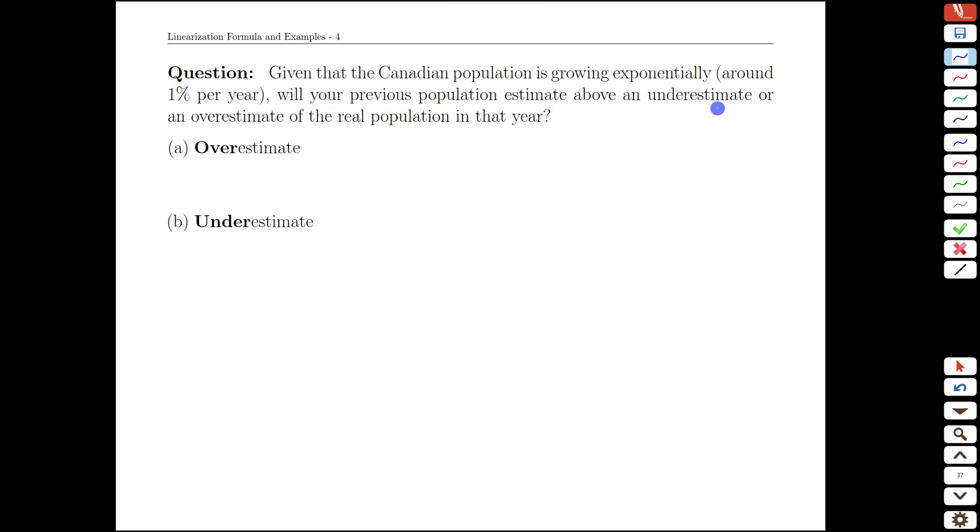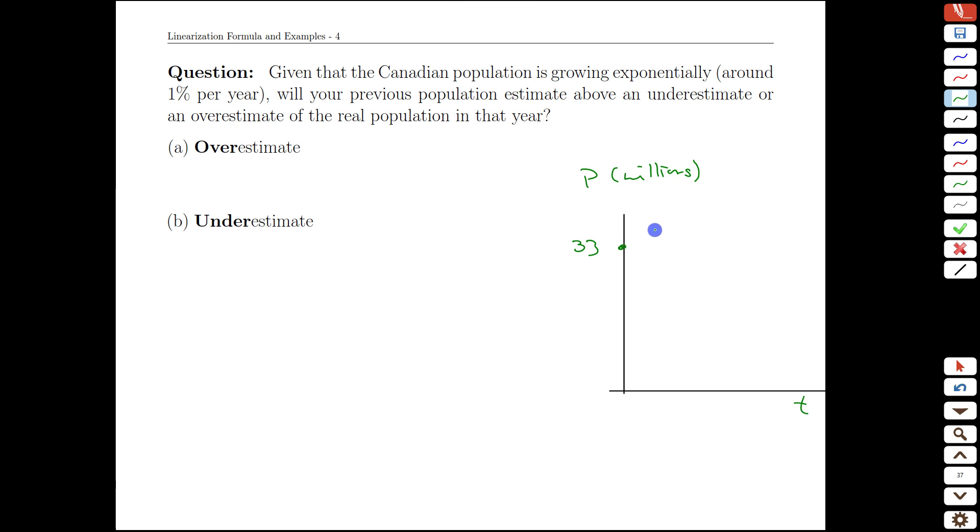When we make these predictions, are we getting an underestimate or an overestimate? Let's just do a quick sketch of what that means. We predicted our 33 million today. That was an exact value. And we knew the slope. And what we just did with our linear model is we basically assumed that things were going to keep going in that straight line manner forever.